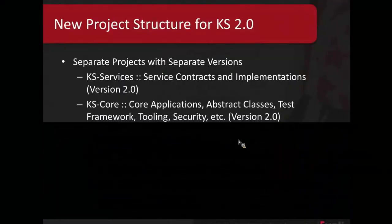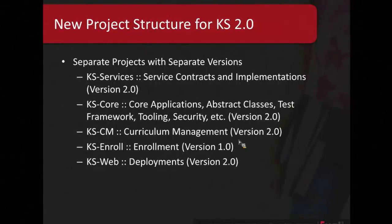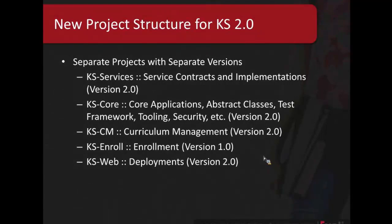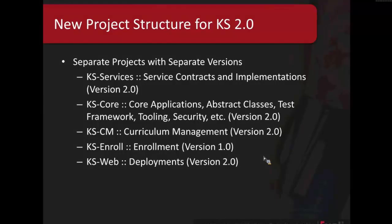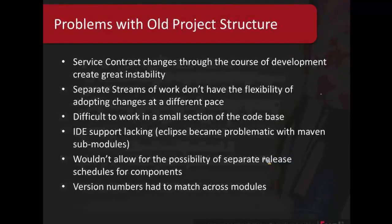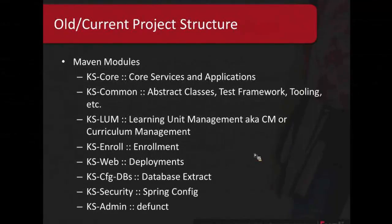There's no point calling Enrollment 2.0 because there was no 1.0. We get into separate streams of work and disparate versioning — trying to keep everything in one project is not supporting that. Finally we have KS Web, which is our deployments. We currently have those two deployments mentioned earlier and eventually we'll be expanding to a different deployment configuration.